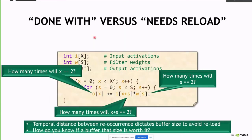Not only the number of times you reload something, but the distance between when you last accessed it and will access it again — that will dictate the buffer size you need. Your computer architecture hat comes on and you say: if I need a buffer of size a million, every time I make my buffer bigger, the energy cost to access it goes up. So is it worth it, or should I just reload it from DRAM?